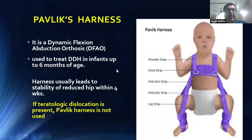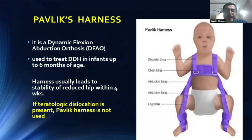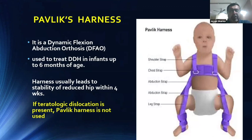The Pavlik harness is a dynamic flexion abduction orthosis used in treating DDH in infants up to six months of age. Another indication is infants with fractures of the shaft of femur. It usually leads to stability of the reduced hip within four weeks. If teratological dislocation is present, Pavlik harness is contraindicated.